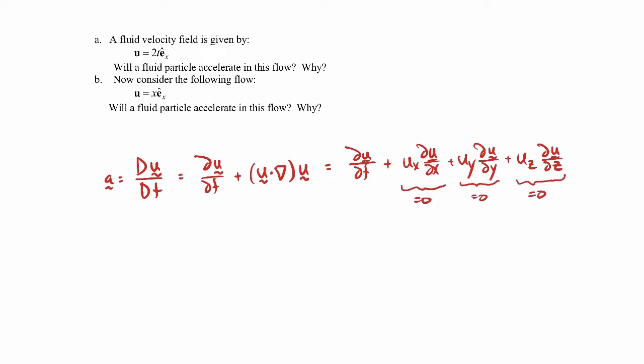By the way, we call this part here the convective derivative. This accounts for changes in accelerations due to changes in position. So that doesn't occur here, and that's because this is not a function of position. The only thing we're left with is this first term, that's the Eulerian derivative.